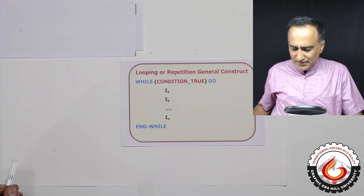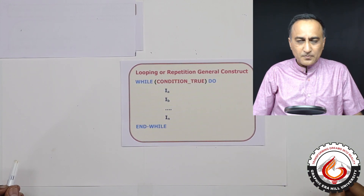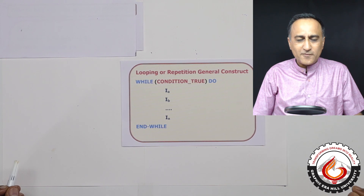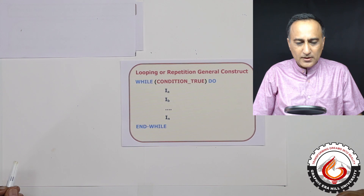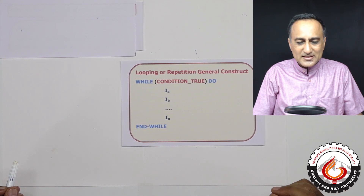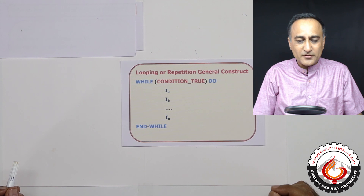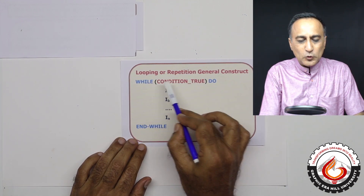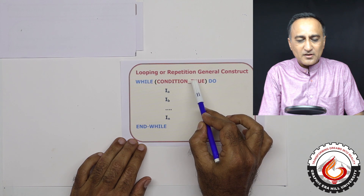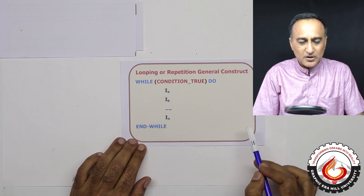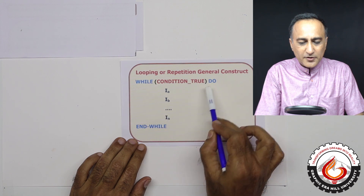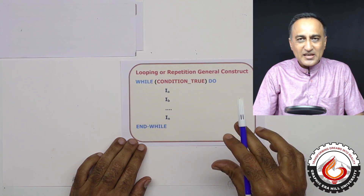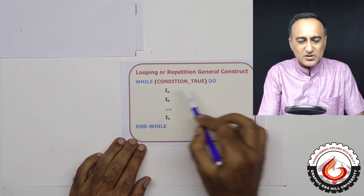Before we take a look at the algorithm to find the sum of natural numbers from 1 to n, we will look at the skeleton or syntax diagram of the while-do-end-while loop. This represents the syntax of looping or repetition using a while-do statement. While, do, and end-while are the keywords, written in blue.